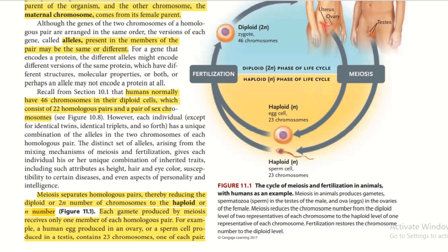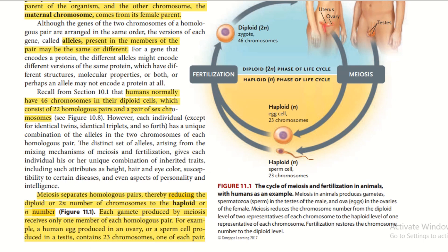Each individual has a unique combination of alleles in the two chromosomes of each homologous pair. The distinct set of alleles arising from the mixing mechanism of meiosis and fertilization gives each individual their unique combination of inherited traits, including attributes such as height, hair, eye color, susceptibility to certain diseases, and even aspects of personality and intelligence. Meiosis separates homologous pairs, reducing the diploid, or 2N, number of chromosomes to the haploid, or N, number.